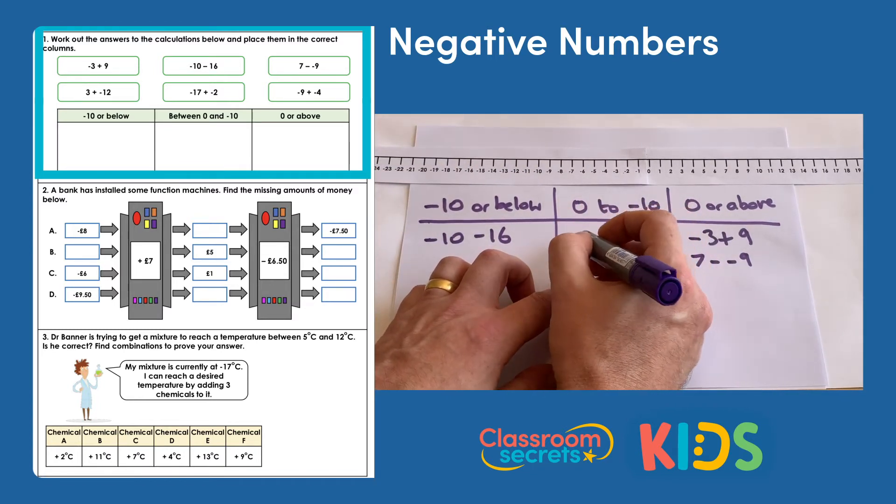Question 2 says a bank has installed some function machines — find the missing amounts of money. For part a, we have negative 8 pounds and we need to add 7 pounds, giving us negative 1 pound. For part b, we're given 5 pounds in the middle; the function machine added 7 pounds, so to find the input we do the inverse: 5 pounds take away 7 pounds gives us negative 2 pounds.